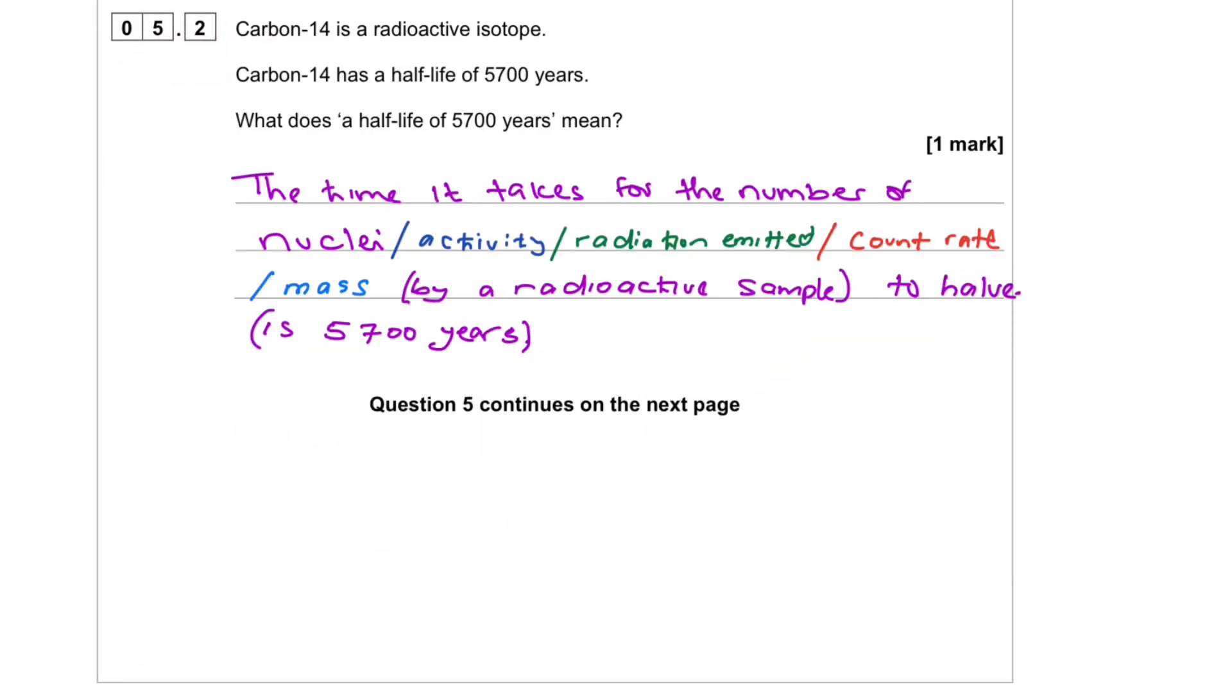Question 5.2. Carbon-14 is a radioactive isotope. Carbon-14 has a half-life of 5,700 years. What does a half-life of 5,700 years mean? The time it takes for the number of nuclei or activity or radiation emitted or count rate or mass by a radioactive sample to half is 5,700 years.